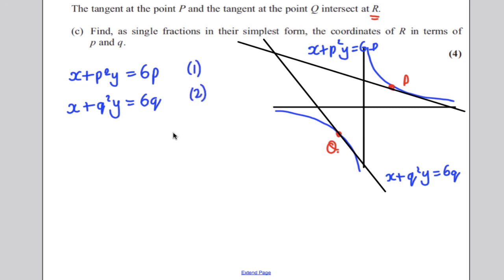The easiest thing in my mind is to take equation one and subtract equation two, because then the x's would be eliminated. And we'd get p²y - q²y = 6p - 6q. Then we can factorise. Factorise out the y. p² - q² = factorise this side, 6. Take out the factor of 6, 6(p - q).